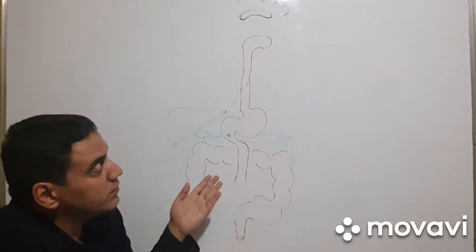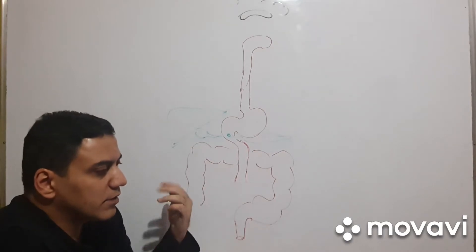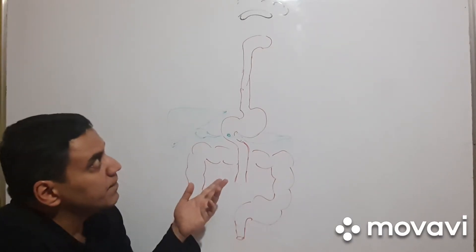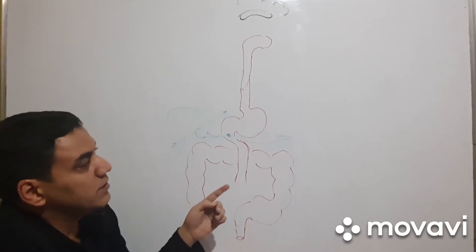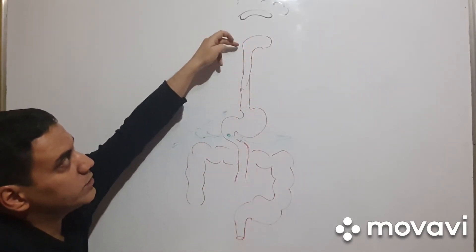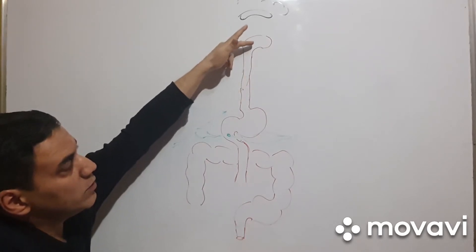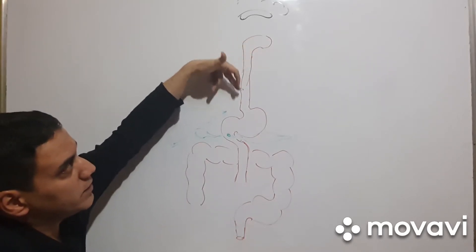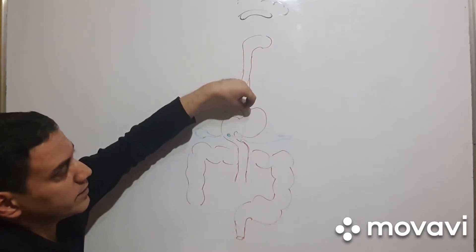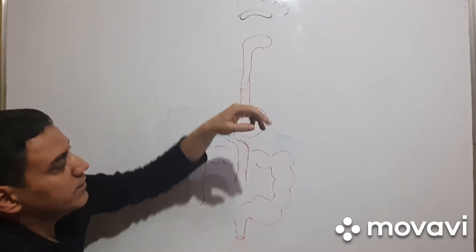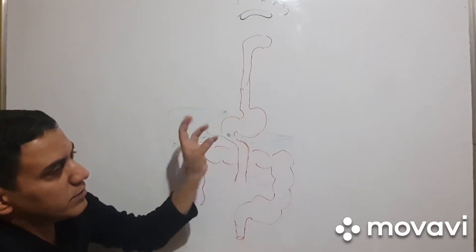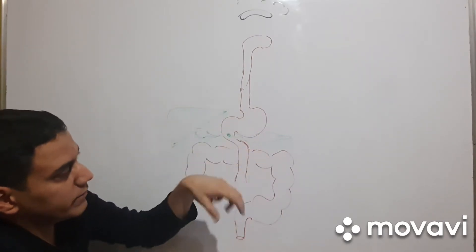Then comes the mouth, meaning the oral cavity, where we have the tongue, teeth, and salivary glands. Then the esophagus, which is responsible for swallowing. The esophagus consists of three levels: the oropharyngeal level, the main esophageal corpus, and the lower esophageal sphincter, or sphincter of Cardia. Then the stomach, which has two functions: secretion and peristalsis — the motor function.